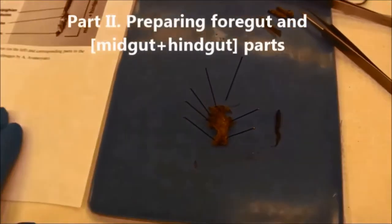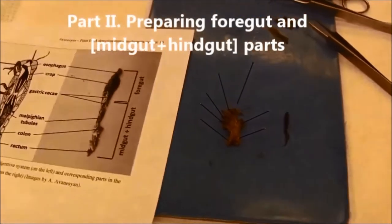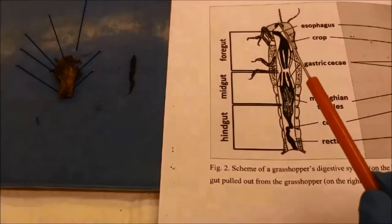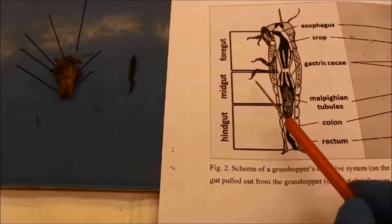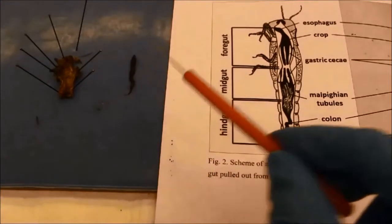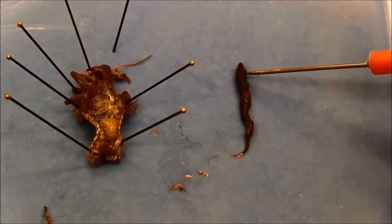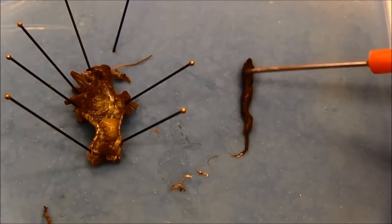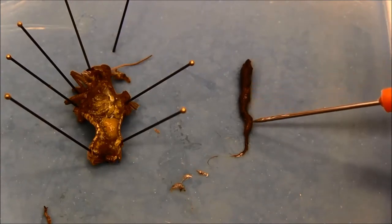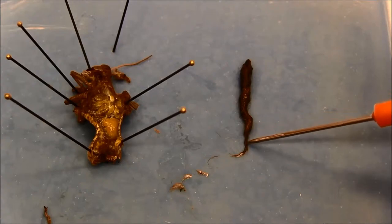To prepare different parts of the gut for DNA extraction, I need to review the scheme of a grasshopper's internal structure to match the main parts of the digestive system. The foregut includes the buccal cavity, pharynx, esophagus, crop, and proventriculus, after which the midgut begins.